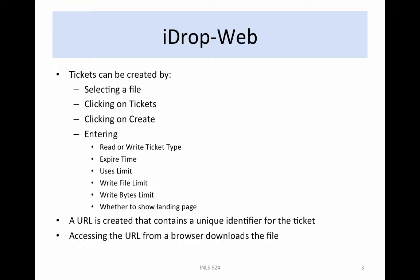The data grid automatically deletes the ability to use a ticket when a control limit is exceeded. The iDropWeb client supports the creation of tickets. The steps required include selecting a file, clicking on the tickets tab, clicking on create, entering whether a read or write ticket is being created, the expiration time, the number of allowed uses, the number of files that may be written, the amount of storage space that can be used, and whether a landing page is shown when the ticket is used. The system then creates a URL containing a unique identifier, and checks this identifier to impose the usage restrictions. The URL can be loaded into a browser to download a file.